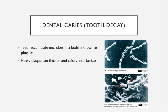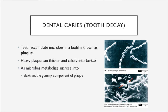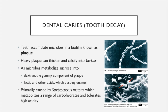When plaque becomes heavy enough, it can thicken and calcify into what we colloquially know as tartar. This happens primarily as a result of the carbohydrate sucrose, the technical term for table sugar. As the microbes in your mouth metabolize sucrose, they transform it into two different things: dextrin, which is the gummy component of plaque, and lactic acid as well as other organic acids, which lower the pH around your teeth and contribute to destruction of the enamel layer.